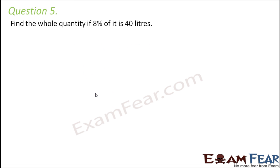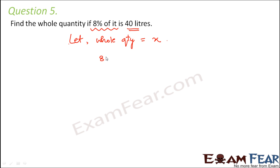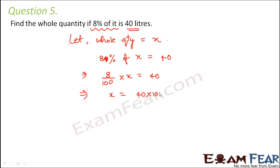Question number 5: Find the whole quantity if 8 percent of it is 40 liters. We do not know the whole quantity, so let us assume it is x. As per the question, 8 percent of x is 40 liters — that is 8 out of 100 into x equals 40. So x equals 40 into 100 divided by 8, which equals 500. Therefore the whole quantity is 500 liters.